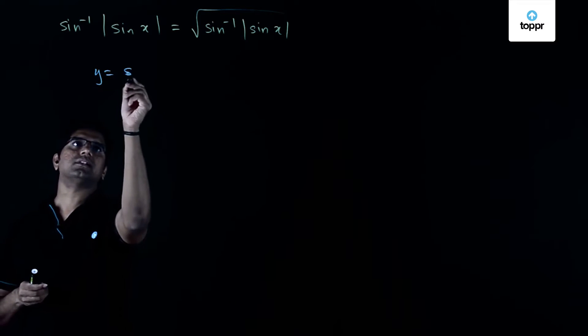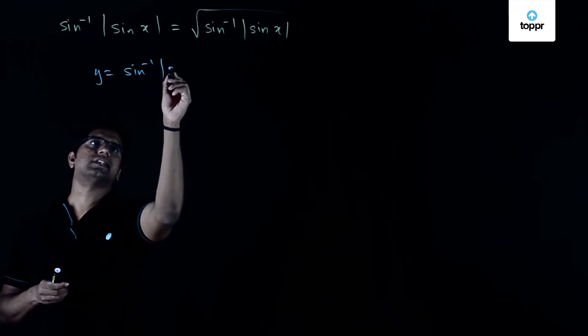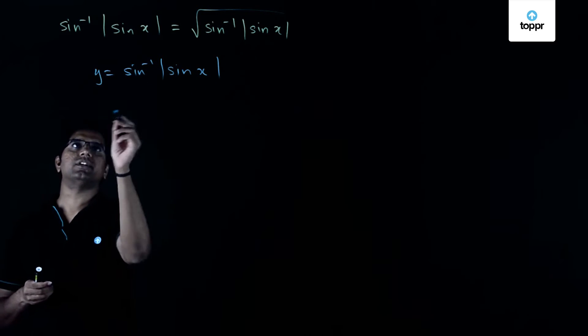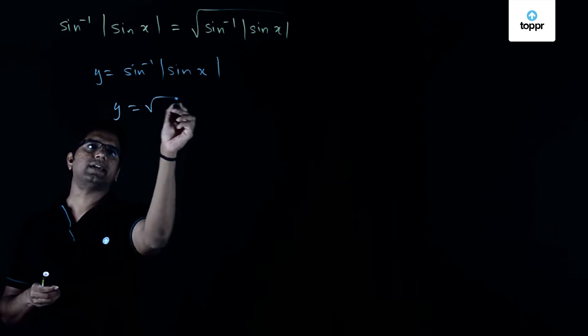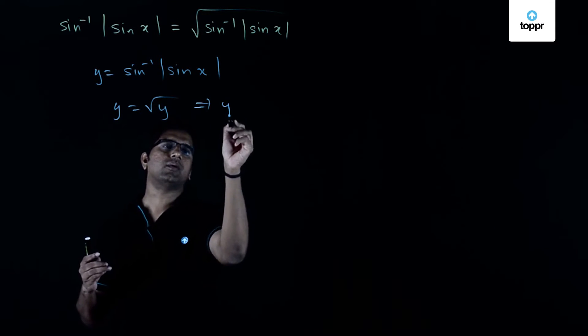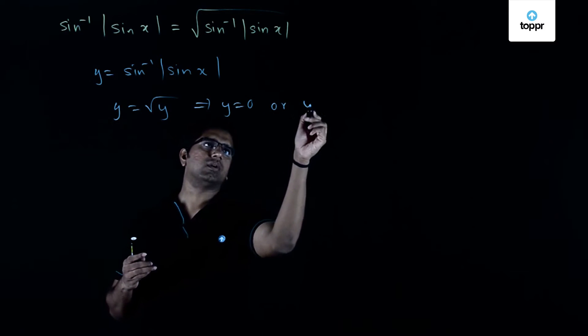So let y equal sine inverse of sine x. Then the equation reduces to y equals root y. For which we know the solutions are y equals 0 or y equals 1.